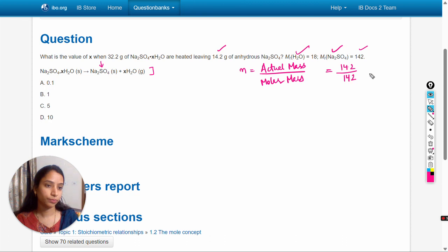Actual mass is 14.2 and molar mass is 142, so the number of moles will be 0.1. The number of moles of Na2SO4 are 0.1. In this equation we can see that the number of moles of this moiety and Na2SO4 are equal.